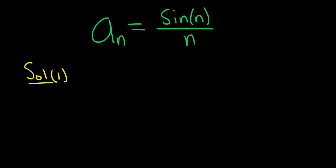To do that, you just have to notice that the numerator is always between negative one and one, because the sine of n is always between these two numbers. If you think about the graph of sine x, it's a wave function, and the maximum value of sine is one and the minimum value is negative one. So it's always trapped between these two numbers.